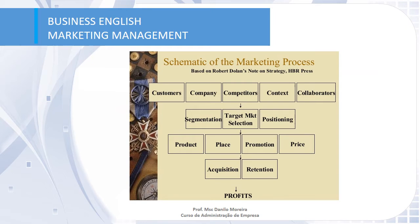This is the most important slide we are going to discuss during this lesson — this is the Dolan-Barfowler model. Here you can see all the five C's, the STP, the four P's, and the acquisition and retention of customers, where we can identify and have as a result the profits of this process.